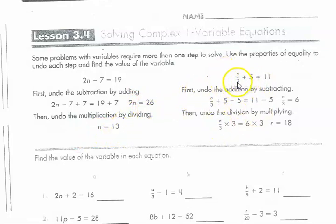If you have this one right here, n divided by 3 plus 5 equals 11. So again, we're going to do this in small steps. First, you undo the addition by subtracting. So you're going to take this 5 and move it to the other side. How do you do that? Well, you subtract 5.